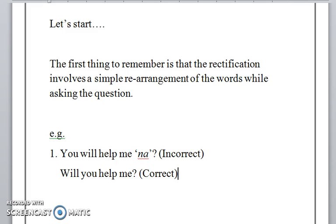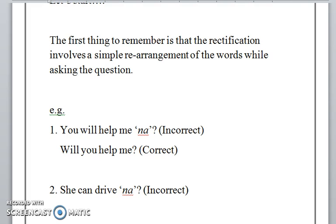Let's do another example: 'She can drive na'. Of course that is the incorrect way to ask the question. The punch of 'na' is needed because the arrangement is improper, so let's correct it: 'Can she drive?' Now certainly there is no need for any 'na'. The line has been rectified immediately.